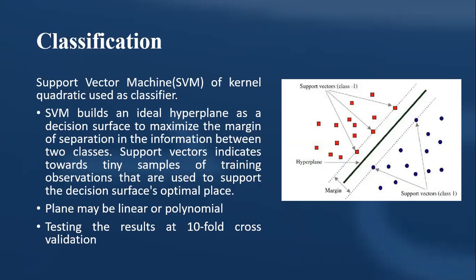SVM divides the plane which may be linear or polynomial. For testing the results, 10-fold cross-validation was used. SVM decreases the complexity of the system and it is the best classifier.